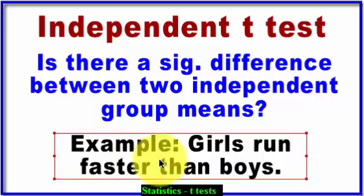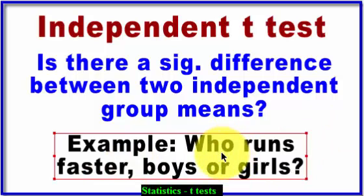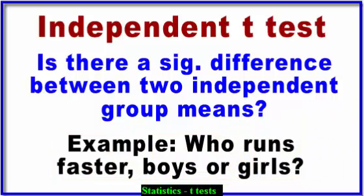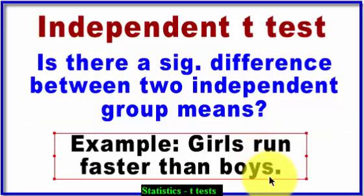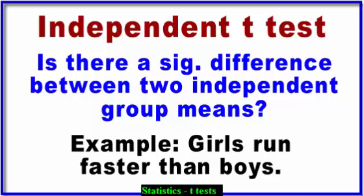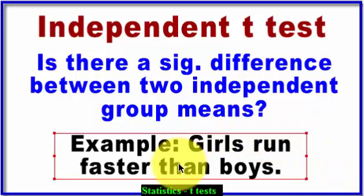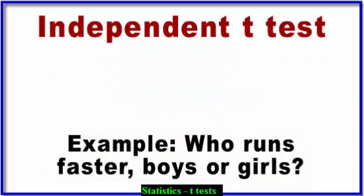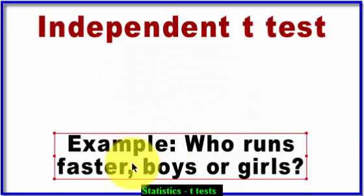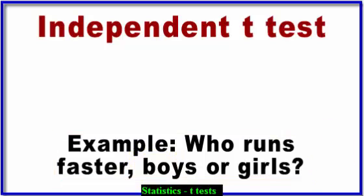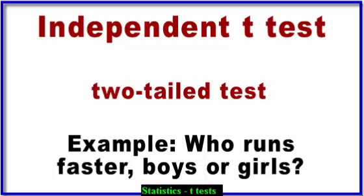We could change that example from 'who runs faster, boys or girls?' — where we're not sure — to picking a side: 'girls run faster than boys,' and we would test that statement. There is a slight difference in testing when you pick one side or the other. When you're uncertain of the outcome — one could be less than, one could be greater than — that's what we call a two-tailed test, because we're not sure.